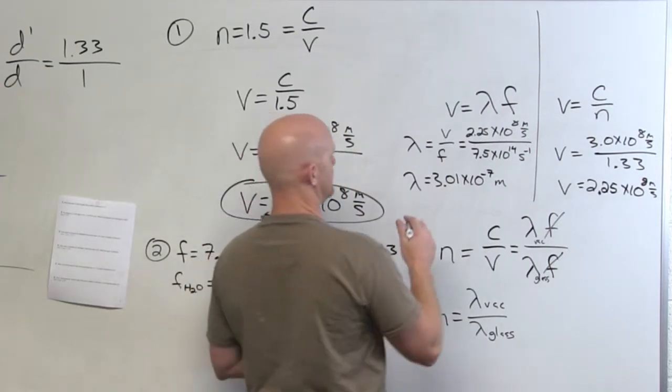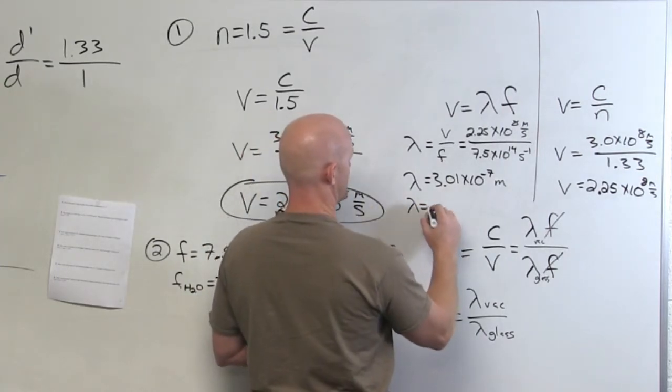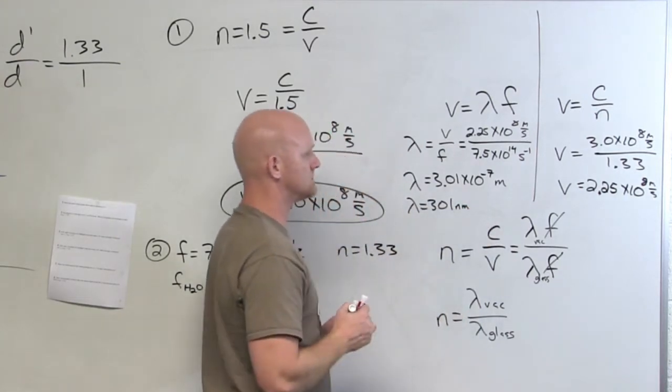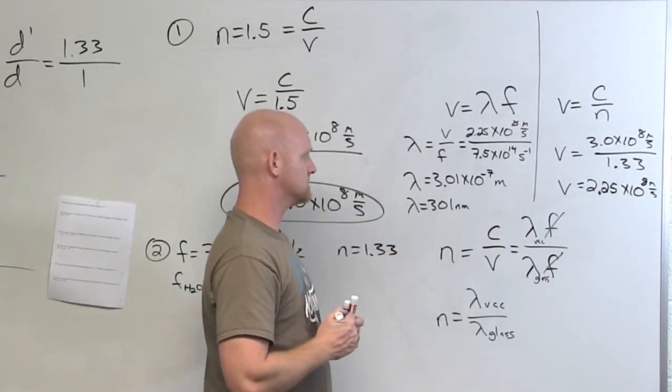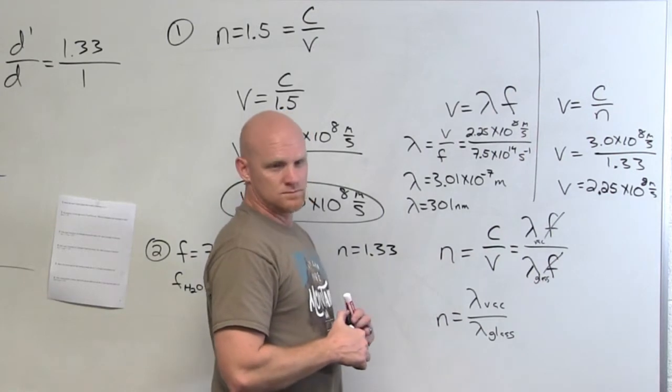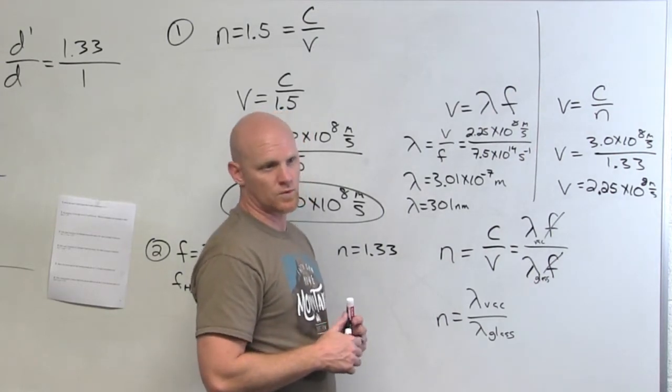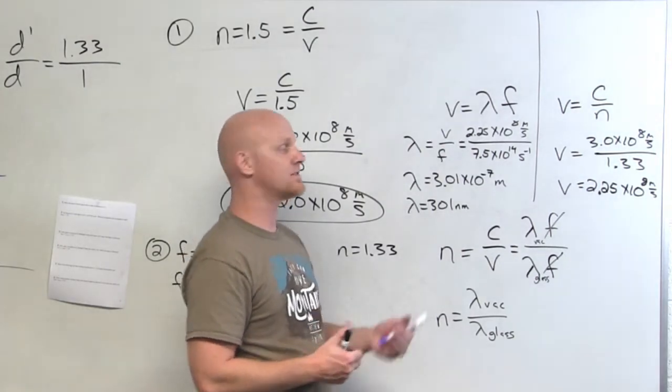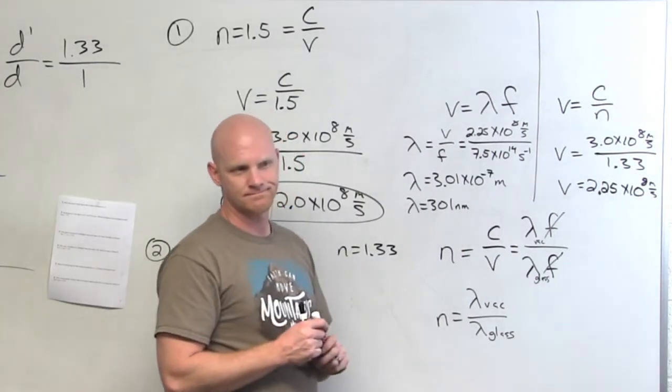3.25 times 10 to the 8th meters per second, so hertz is one over seconds. Which is 3.0 times 10 to the... If you worked this out, you'd find out that this was roughly 400 nanometers in air. It's 300 nanometers in the water.